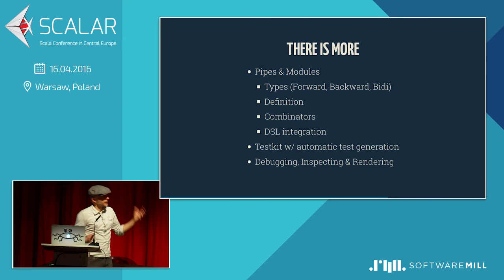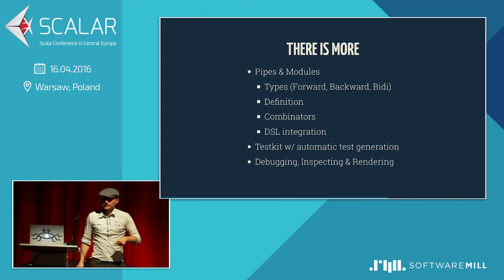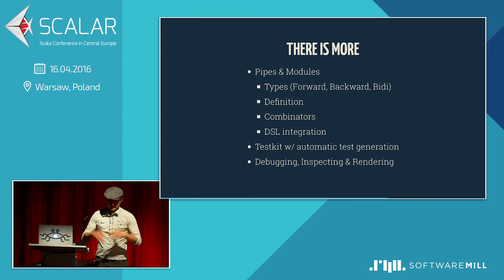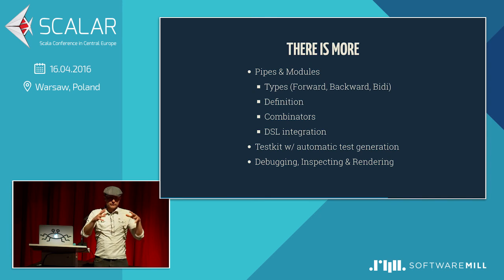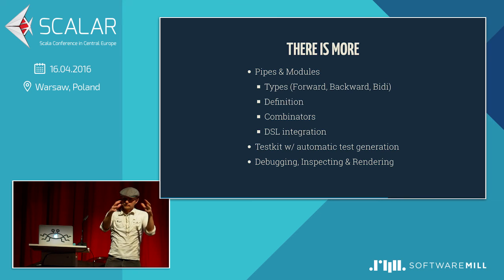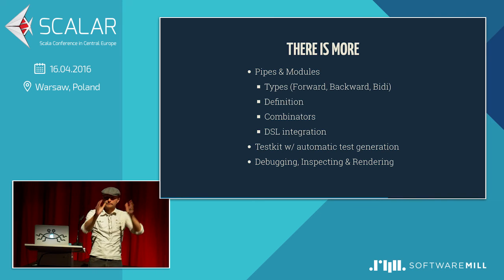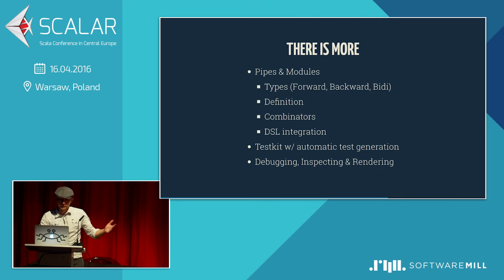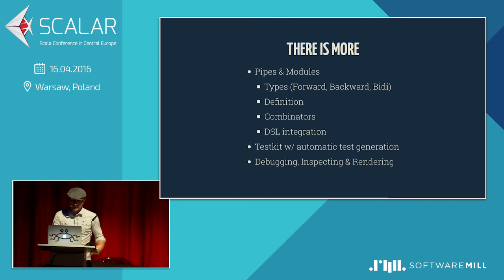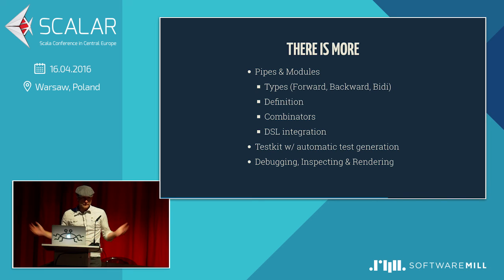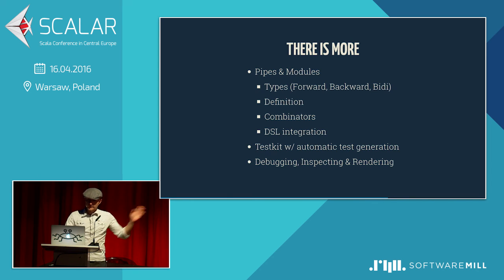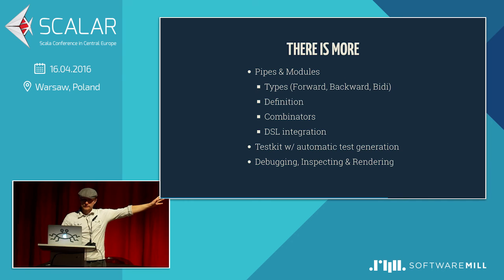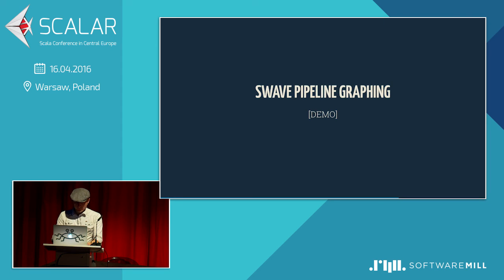There's more I could talk about. There are pipes and modules — one very important thing you need in order to be properly usable is the ability to package things together: generate elements, give them a name that you can use as a black box later to reuse. That's called modules and pipes. There's a test kit that does automatic test generation, so everything is automated, which is great. Debugging is really important to me because it's tough to understand what's going on in my stream graph, so inspecting and rendering is something I'm particularly concerned about.